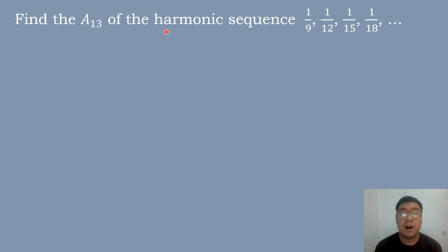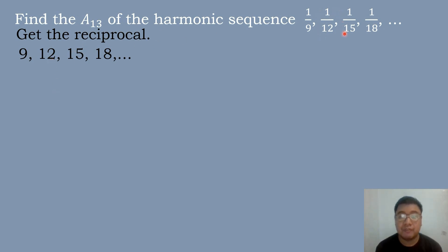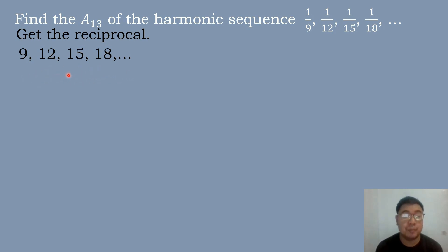Find the 13th term of the harmonic sequence: 1/9, 1/12, 1/15, 1/18, and so on. The first step is to get the reciprocal of each term. The reciprocal of 1/9 is 9. The reciprocal of 1/12 is 12. The reciprocal of 1/15 is 15. The reciprocal of 1/18 is 18. So the harmonic sequence becomes an arithmetic sequence by getting the reciprocal of each term.